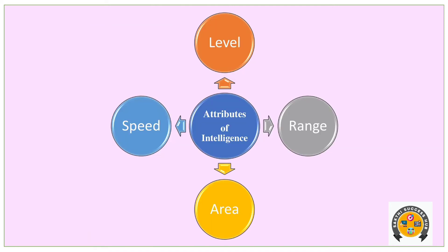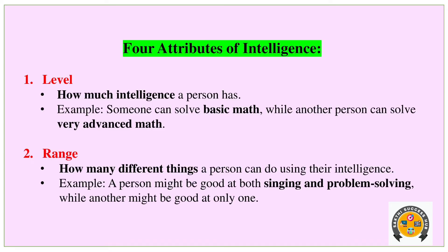The attributes of intelligence are: Level, Range, Area, and Speed. The first attribute is Level — how much intelligence a person has.